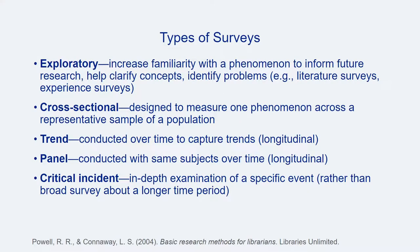Surveys come in various types. Exploratory surveys help increase understanding and familiarity with a phenomenon, and are typically used to inform future research. Cross-sectional surveys are designed to measure phenomena across a representative sample of a population. Trend surveys are designed to capture trends over time. Panel surveys are designed to follow changes experienced by the same survey respondents over time. Critical incident surveys are intended to examine some specific event in depth. Any of these types might be appropriate depending on the needs of a given library assessment project.